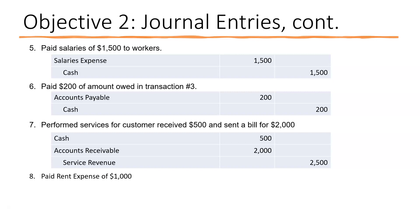Transaction eight: paid rent expense of $1,000. We record rent expense — an increase of an expense is with a debit — so we debit rent expense $1,000. We paid for it with cash, so cash is out the door. We decrease our cash account with a credit — credit cash $1,000.